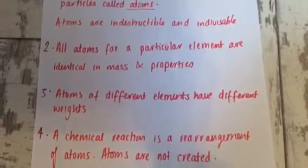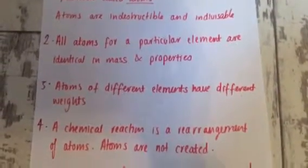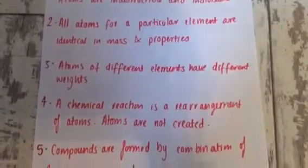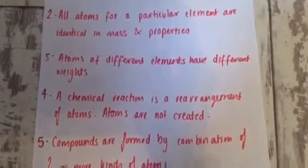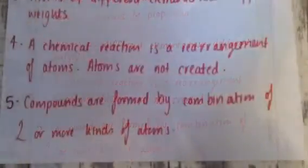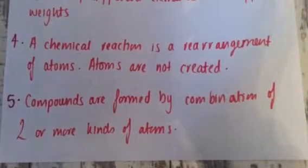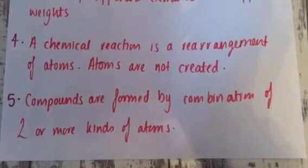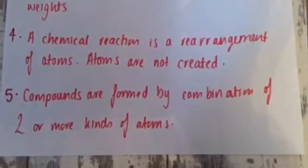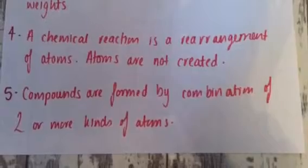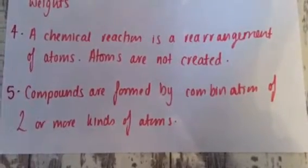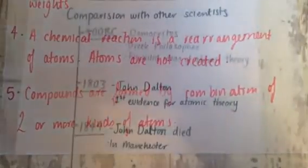Secondly, he said all atoms for a particular element are identical in mass and other properties. Thirdly, atoms of different elements have different weight. Fourthly, a chemical reaction is a rearrangement of atoms, and atoms are not created and are indestructible. Finally, compounds are formed by a combination of two or more kinds of atoms.